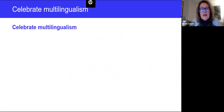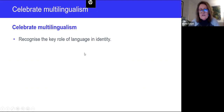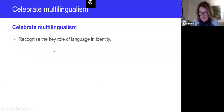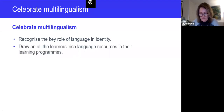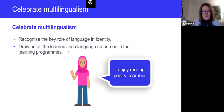The third guiding aspect is celebrating multilingualism. This means first recognizing the key role of language in identity: the languages we speak and use form a key part of who we are. When those languages are recognized in learning, we recognize that person, that student. Secondly, it means drawing on all the rich language resources children bring as the basis for learning — the poetry they might like, the songs they sing — and actually encouraging them to bring those resources into their learning.